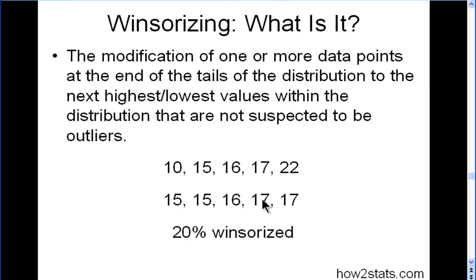This is called 20% Winsorized because 20% of the observations have been modified to the next lowest or highest data points that are not suspected to be outliers. That's a very basic example.